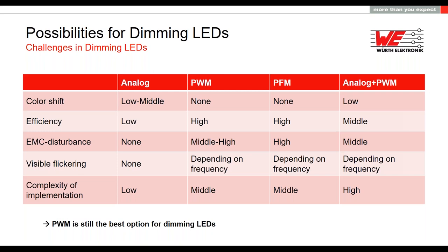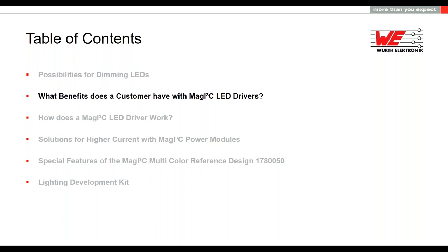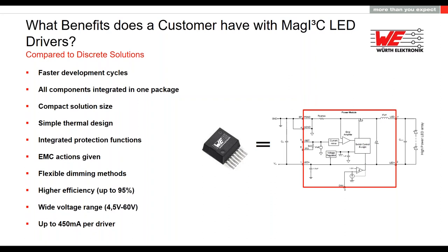What benefits does a customer have with our Magic LED drivers? Compared to discrete solutions, we have faster development cycles because all components are integrated in one package. Here you can see our LED driver in a TO263 casing with a size of 10 by 10 millimeters, with all the marked components in that little casing. We also get a compact solution size, and since there is an exposed pad on the bottom for a good ground connection, we also get a simple thermal design that helps with heat dissipation. Our LED driver has integrated protection functions such as undervoltage lockout and thermal shutdown. Additionally, there are protection functions for the LEDs as well, which I'll come to later.